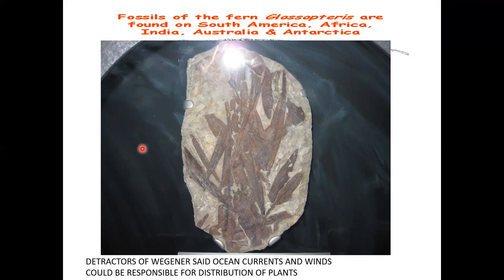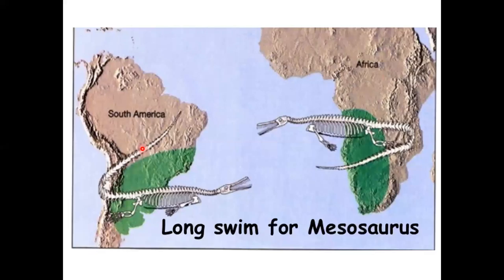Glossopteris is a tropical plant fossil found in Africa, India, Australia, and Antarctica. All of those could be tropical at some point, except Antarctica — six months out of the year it's completely dark. A tropical plant could not grow there if Antarctica had always been in its current location. Alfred Wegener said Antarctica hasn't always been in that location; it used to be in a more tropical location when Glossopteris grew there.